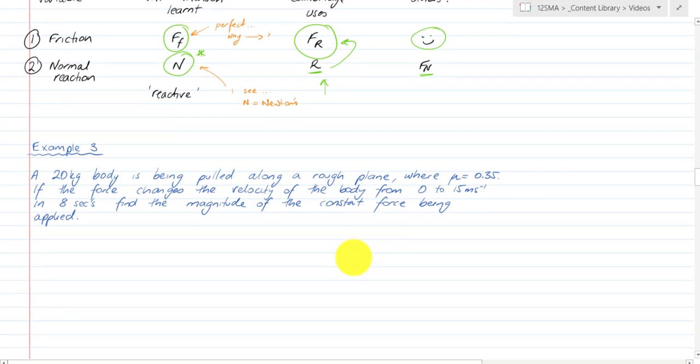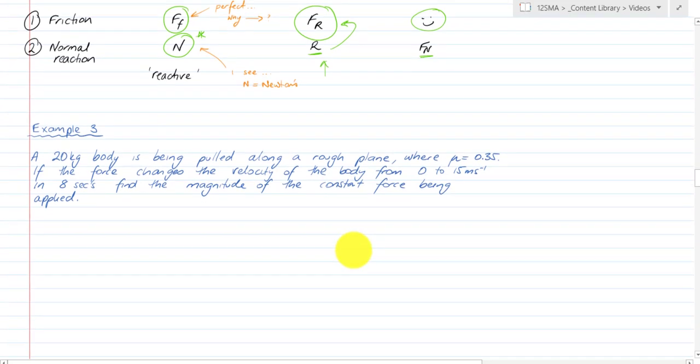Example 3, last example before I finish this section. A 20kg body is being pulled along a rough plane where μ is 0.35. The force changes the velocity of the body from 0 to 15 meters per second in 8 seconds. Find the magnitude of the constant force being applied.